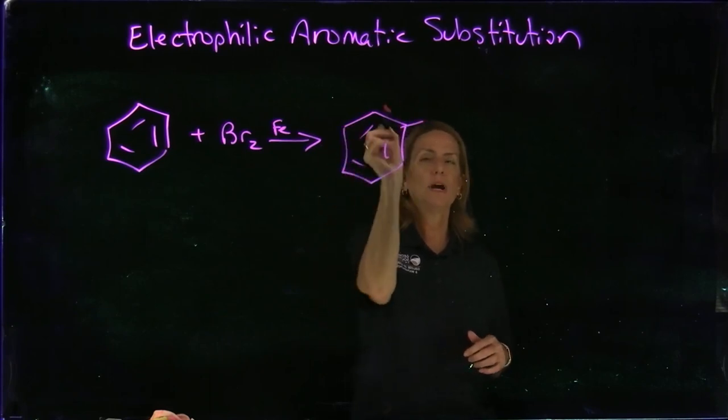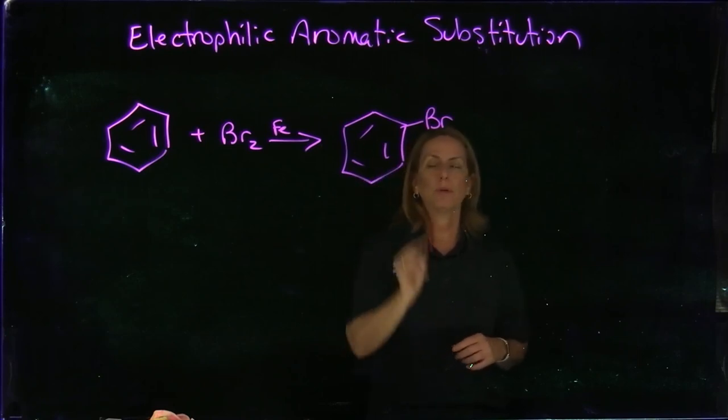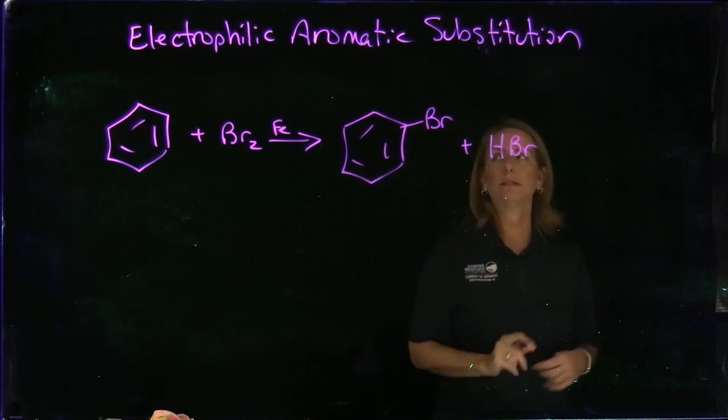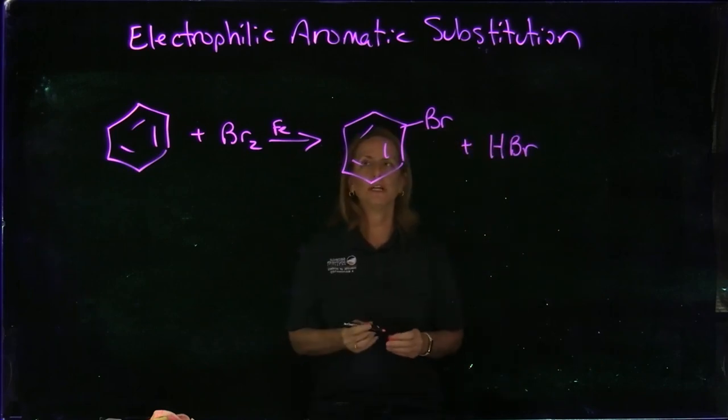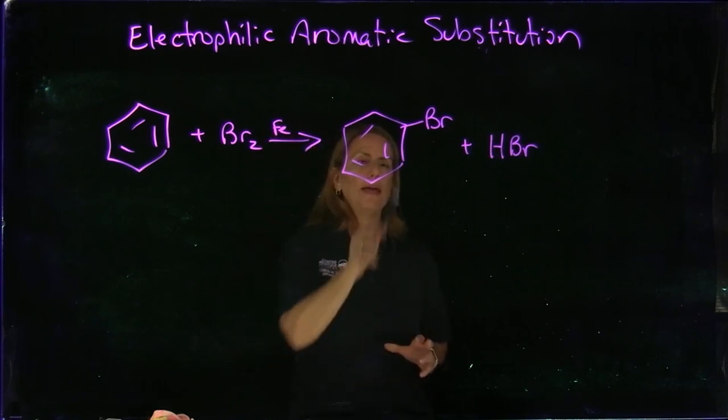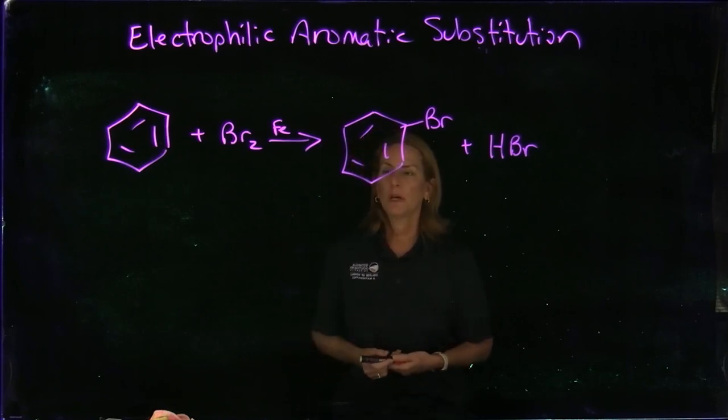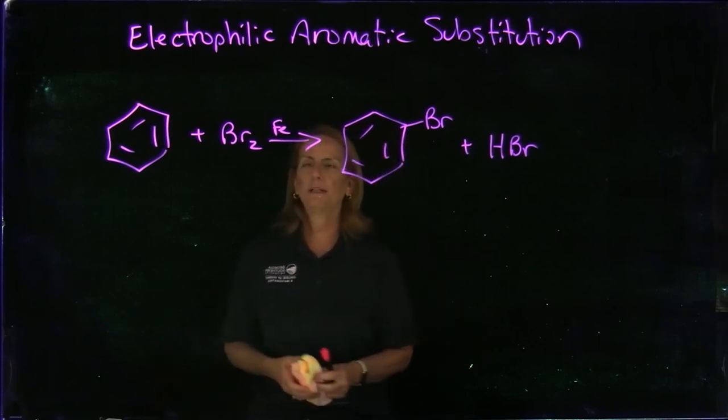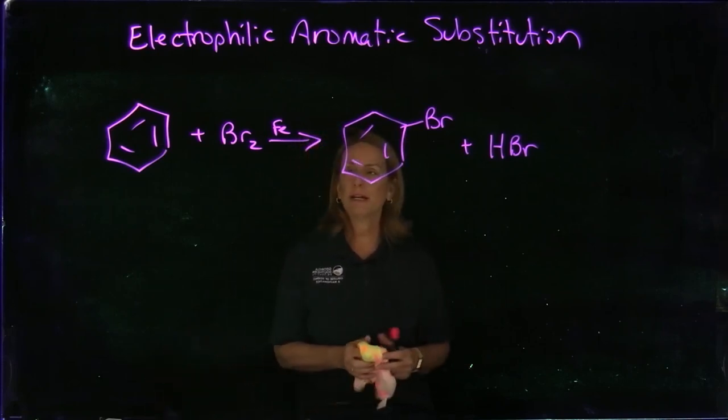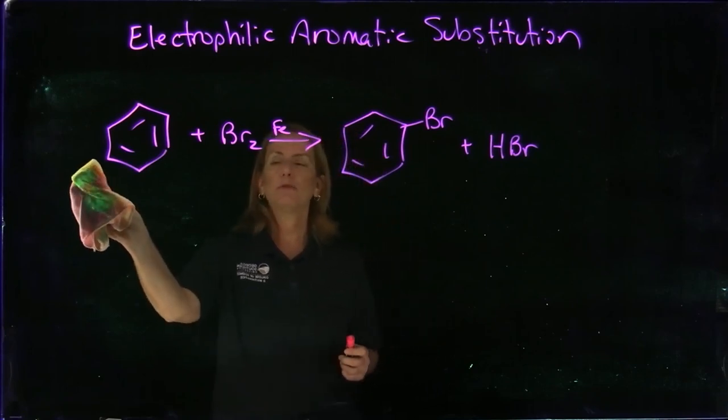We would also form HBr as another product. This is called electrophilic aromatic substitution—we need some sort of electrophile to kick this reaction and get it started, and we're substituting an aromatic hydrogen with a leaving group. There are five different reactions, but before we look at those, let's look at a general mechanism for electrophilic aromatic substitution.